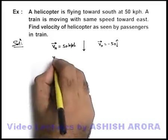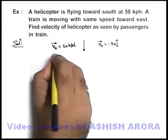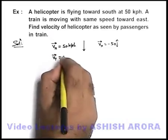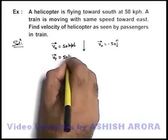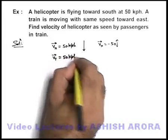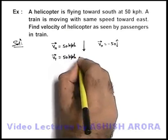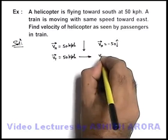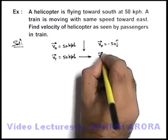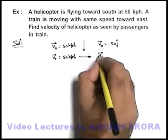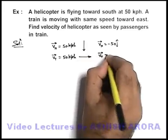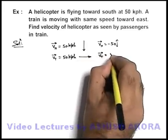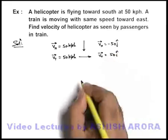The velocity of the train is also fifty kilometers per hour and it is toward east. If we consider east as the positive x-direction, the velocity of the train is fifty i-cap.